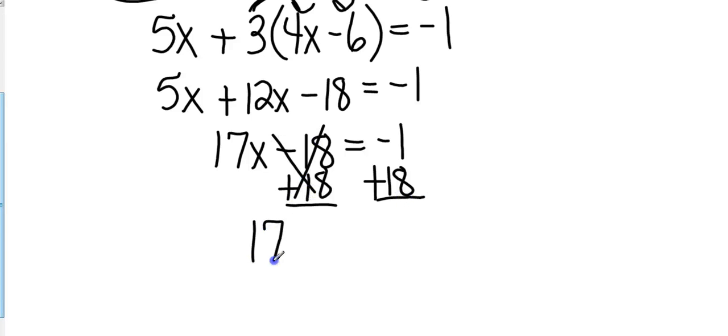That will cancel, so I'm left with 17x equals, and what's negative 1 plus 18? And that's going to be 17. Divide by 17 and x equals 1.